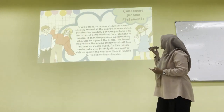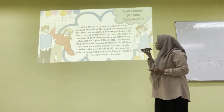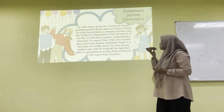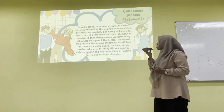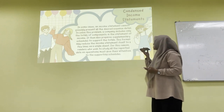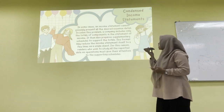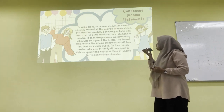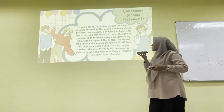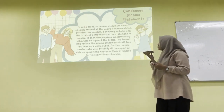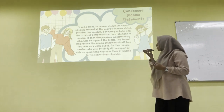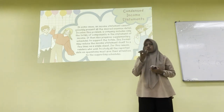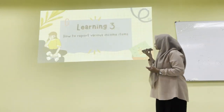Last is the condensed income statement. In some cases, an income statement cannot possibly present all the desired expense detail. So a company includes only the totals of components in the income statement and then prepares supplementary schedules to support those totals. This format may reduce the income statement to just a few lines, so readers who wish to study all reported data on operations must refer to the supporting schedules.